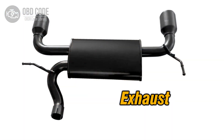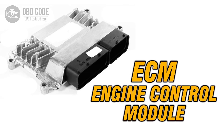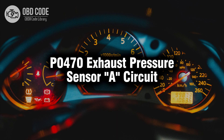3. Check the exhaust system for any obstructions or leaks that may affect pressure readings. Clear obstructions and repair leaks as needed. 4. Verify the operation of the ECM and consider reprogramming or replacing it if other potential causes have been addressed but the issue persists.